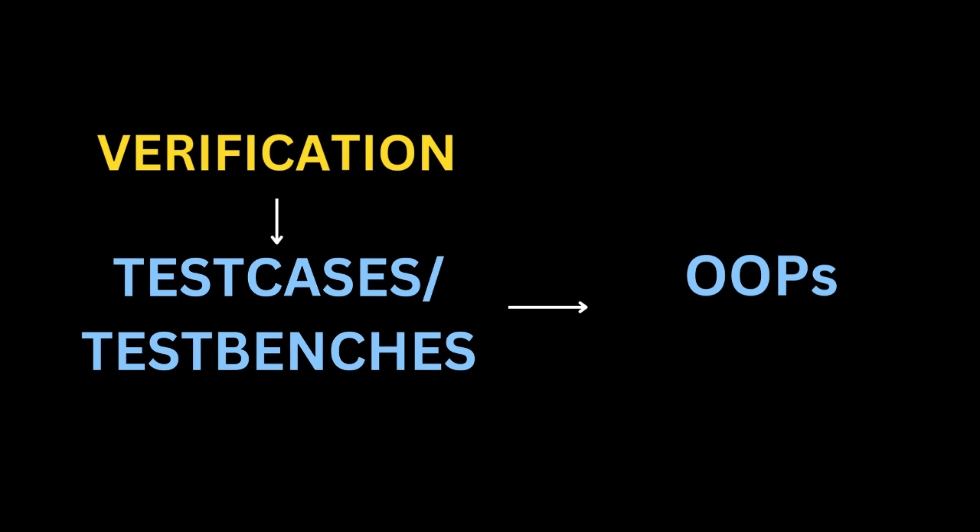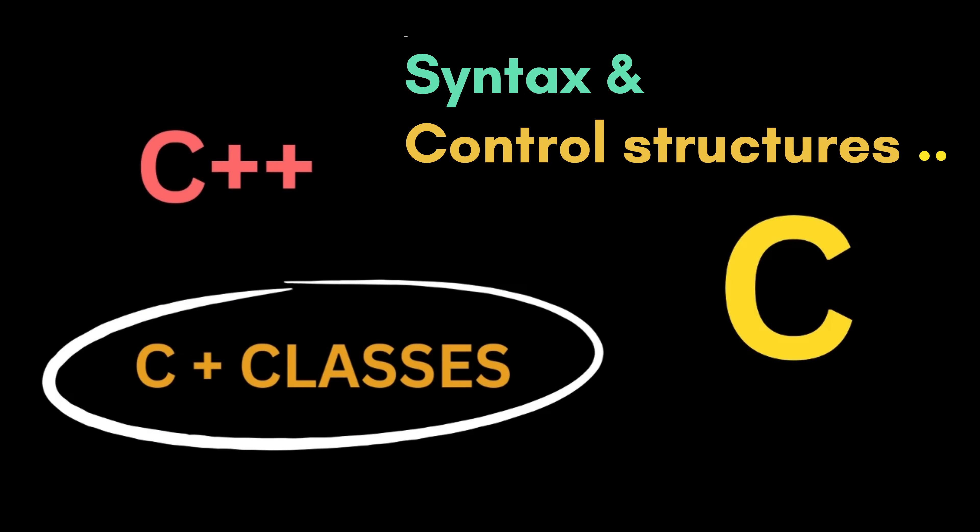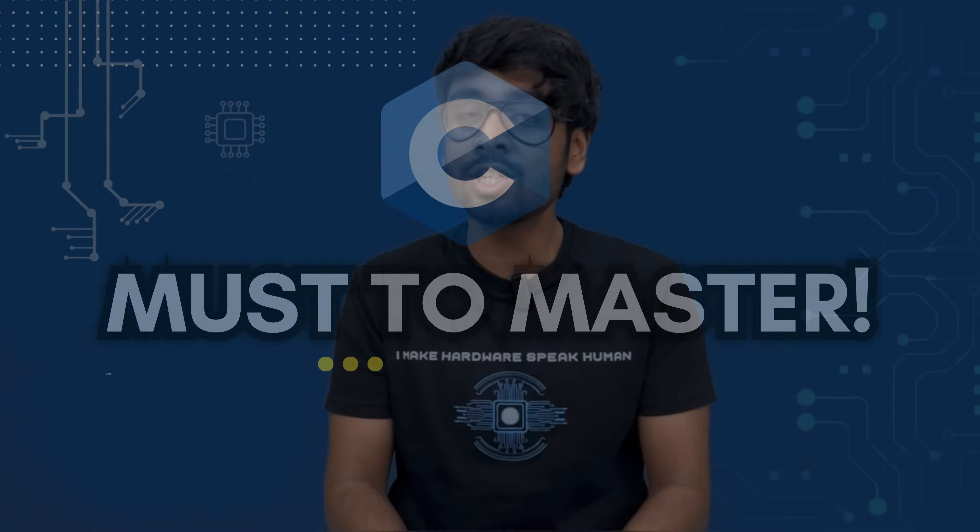But how is C useful for VLSI? C is not directly used in VLSI, but all the languages you need in VLSI are either based on C syntax or are an extension of C. For verification roles, you need to write test cases, which requires OOP concepts — object-oriented programming — and C++ supports it. C++ is basically C with classes; most syntax and control structures are based on C. So it'll be just incremental learning once you master C. C is a must to master for any role.